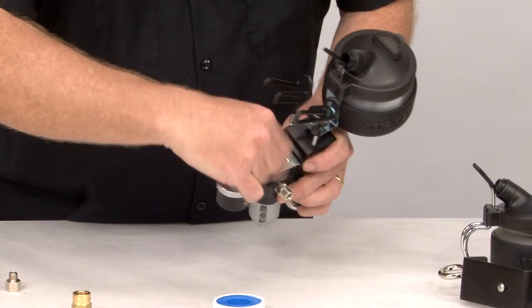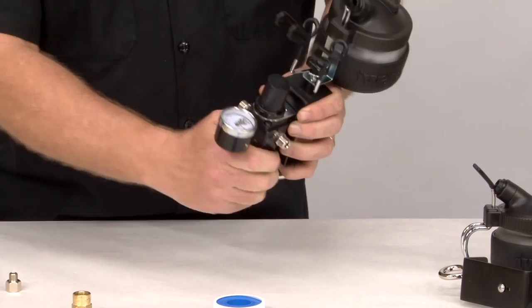and you just slowly start spinning it on there until it threads. Tighten it by hand until it's firm, and then you have the completed Iwata workstation.